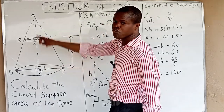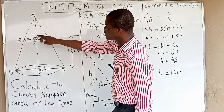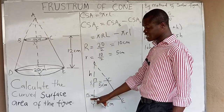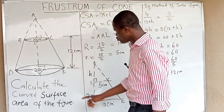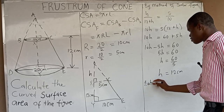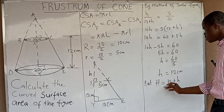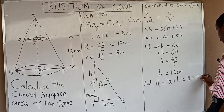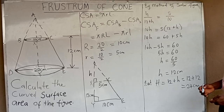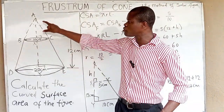The bigger height of the cone is 12 plus H. From here to here is H (the smaller cone height), and from here to here is 12 (the frustum height). Therefore, the bigger height is 12 + H = 12 + 12 = 24 centimeters.